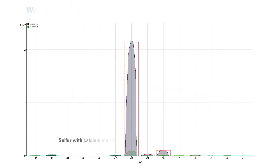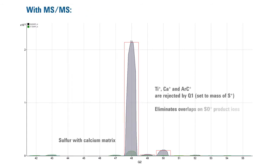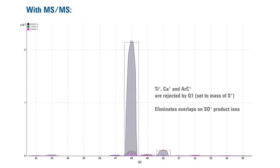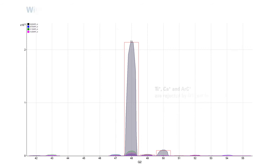Q1 rejects the calcium, titanium, and carbon masses, so these other ions no longer appear in the mass spectrum and can't form overlaps on the SO product ions. MS-MS ensures that the reaction product ion spectrum is consistent and predictable, even if the sample composition changes.